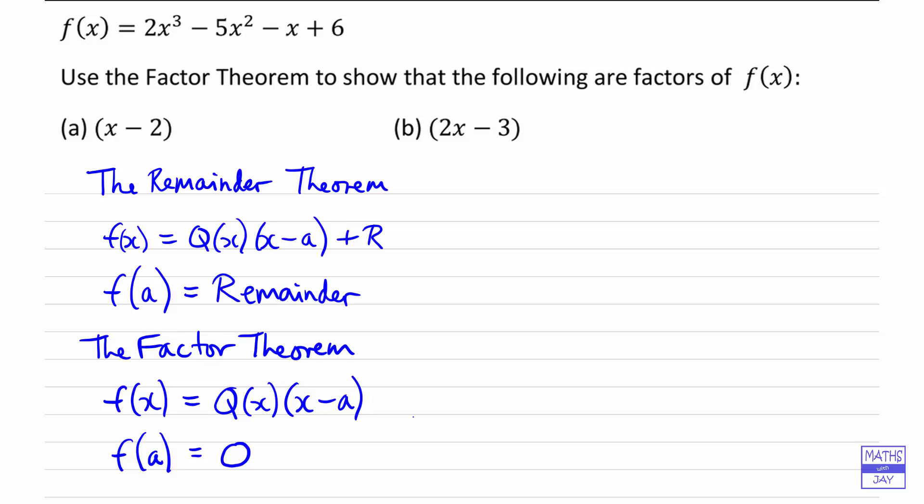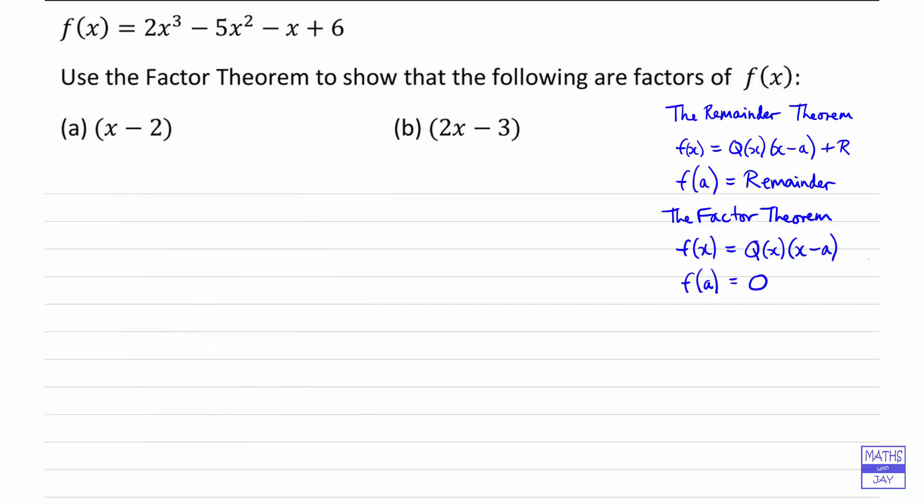So let's move across to the other side and start looking at the example. Looking at part a first, we've got a factor of x minus two, so all we need to do is put that equal to zero. So we want x equal two, and then we're going to evaluate f(x) when x equals two. In other words, we're working out f(2).